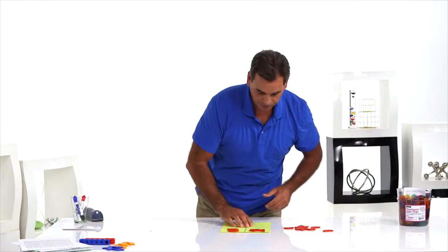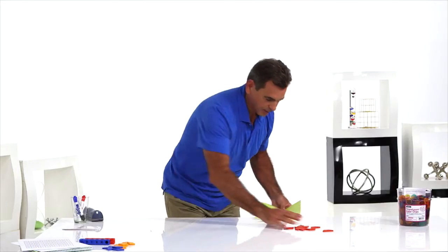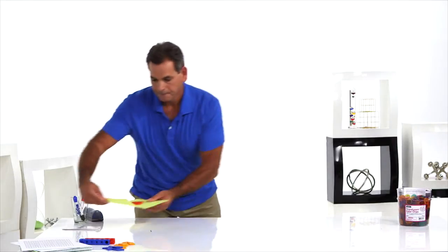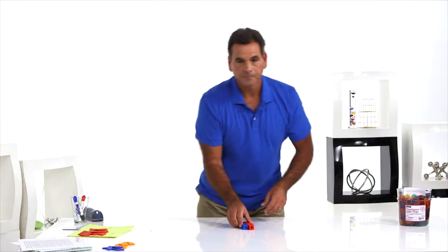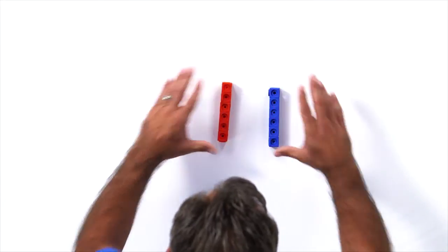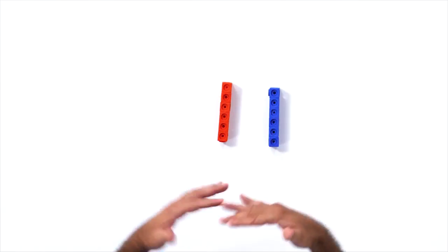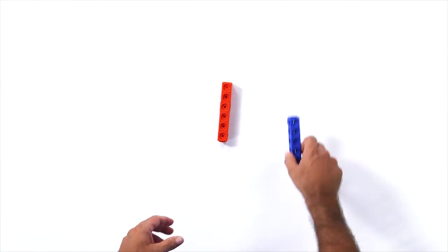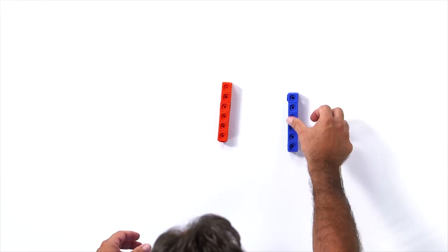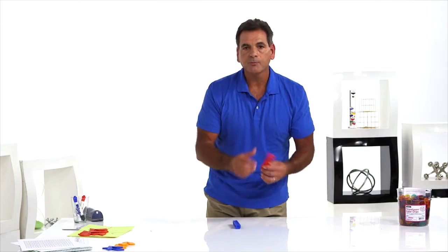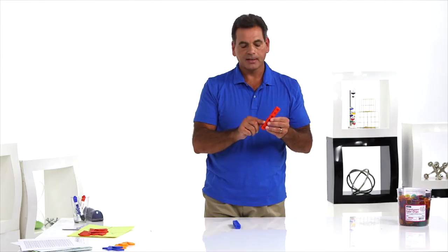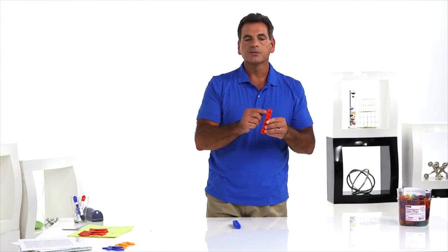And now ordinal numbers — this is a really fun activity using connect cubes. Give them a tower. I have one, two, three, four, five, six. Begin with one tower and start counting: first cube, second cube, third cube, fourth cube, fifth cube, sixth cube.